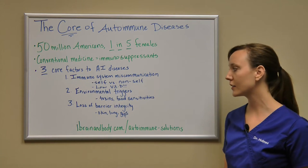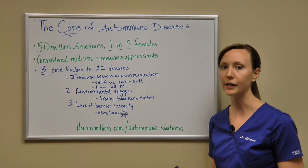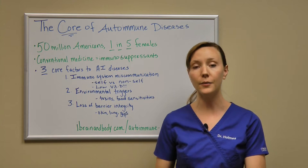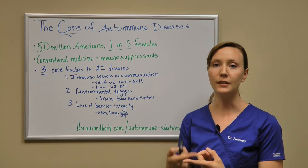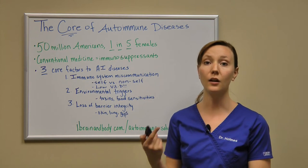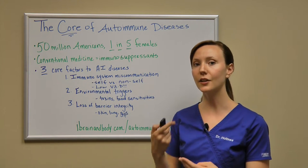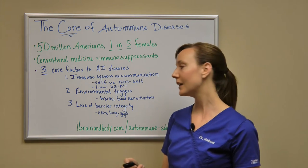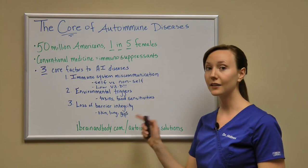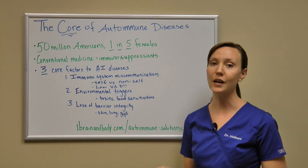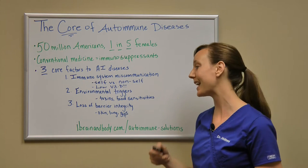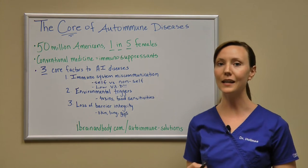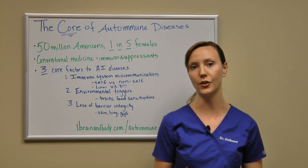Number three is loss of barrier integrity. Our barriers are what surround our blood from the outside world. This includes our skin, our lung mucosa, as well as our gut integrity. Approximately 80% of your immune system is found in and around your gut.